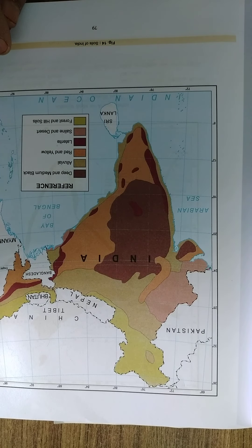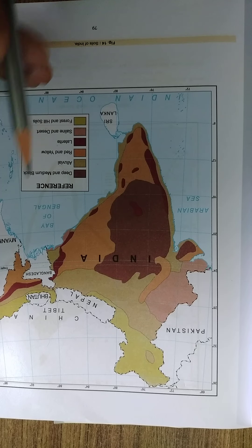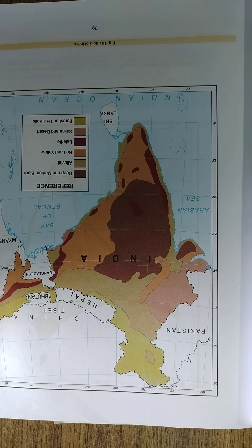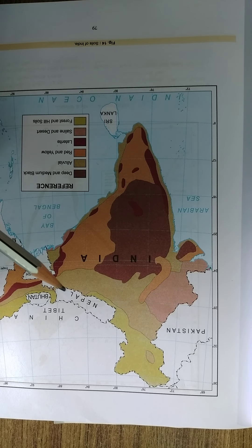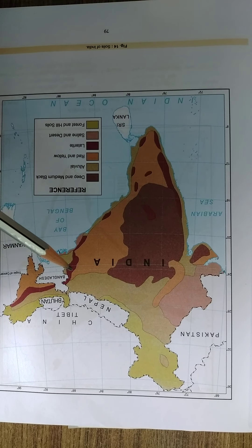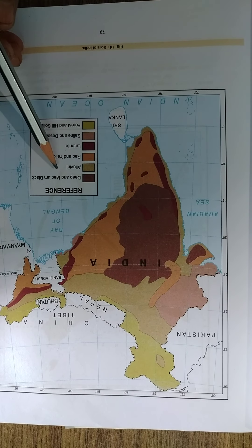Hello dear students, welcome to my channel Maps of India. This map particularly indicates the soil in India. It has six different colors indicated in the lesson, and the reference is given for the six colors in the box.